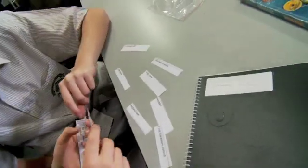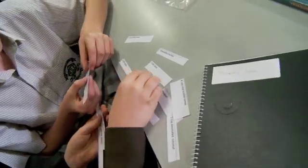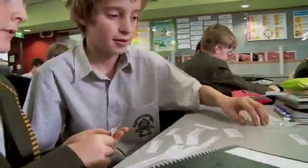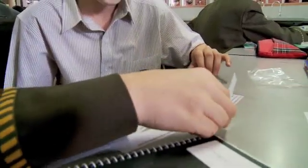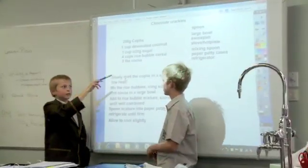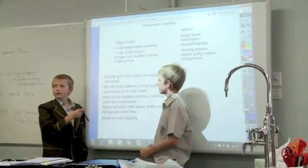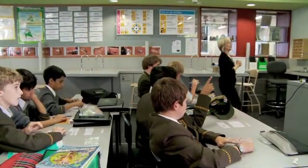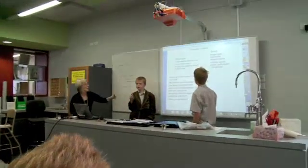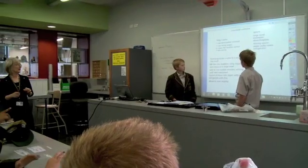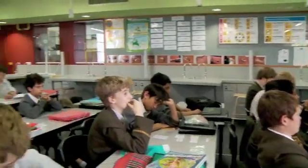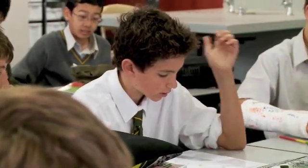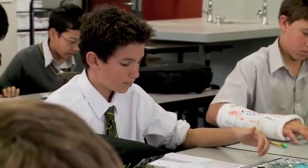I think so. Four cups of rice cereal — that might be the title. Chocolate crackles flavor. Where's the chocolate? I'd give the order differently, because it says slowly melt the copha in the saucepan over low heat. Wouldn't you have to allow it to cool slightly before you add it to the rice bubble mixture? I mixed rice bubbles, icing sugar, coconut and cocoa in a large bowl and then melted the copha.